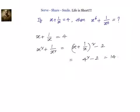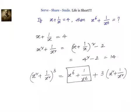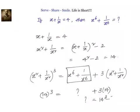Now that we know x square plus 1 by x square equals 14, we cube it. The formula gives: (x square plus 1 by x square) whole cube equals x power 6 plus 1 by x power 6 plus 3 times (x square plus 1 by x square). So 14 cube equals what we want plus 3 times 14. Therefore x power 6 plus 1 by x power 6 equals 14 cube minus 3 times 14.